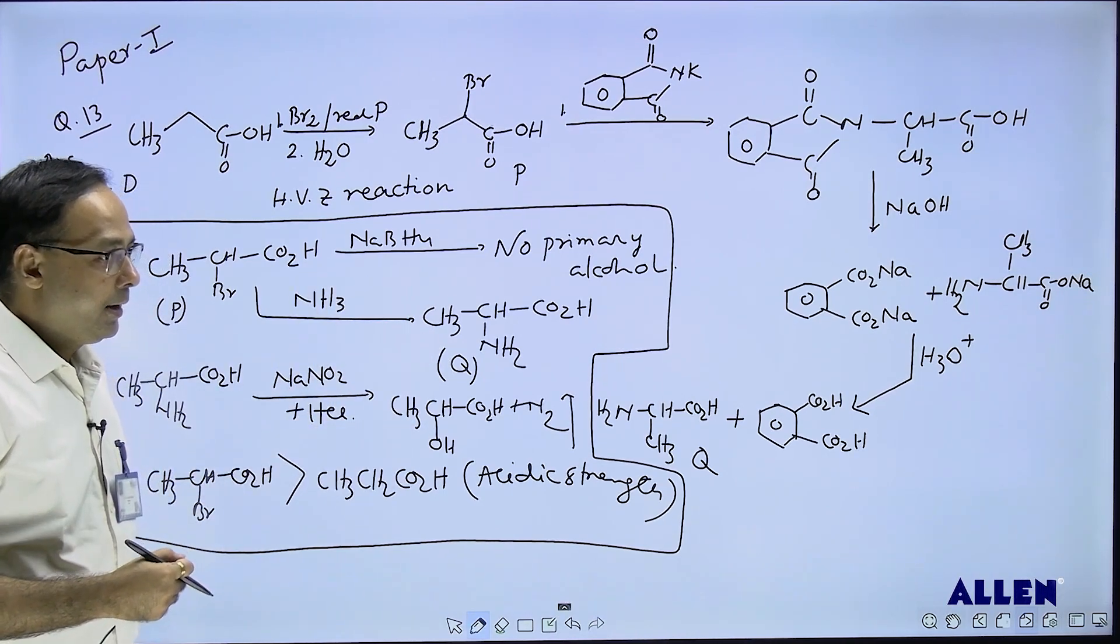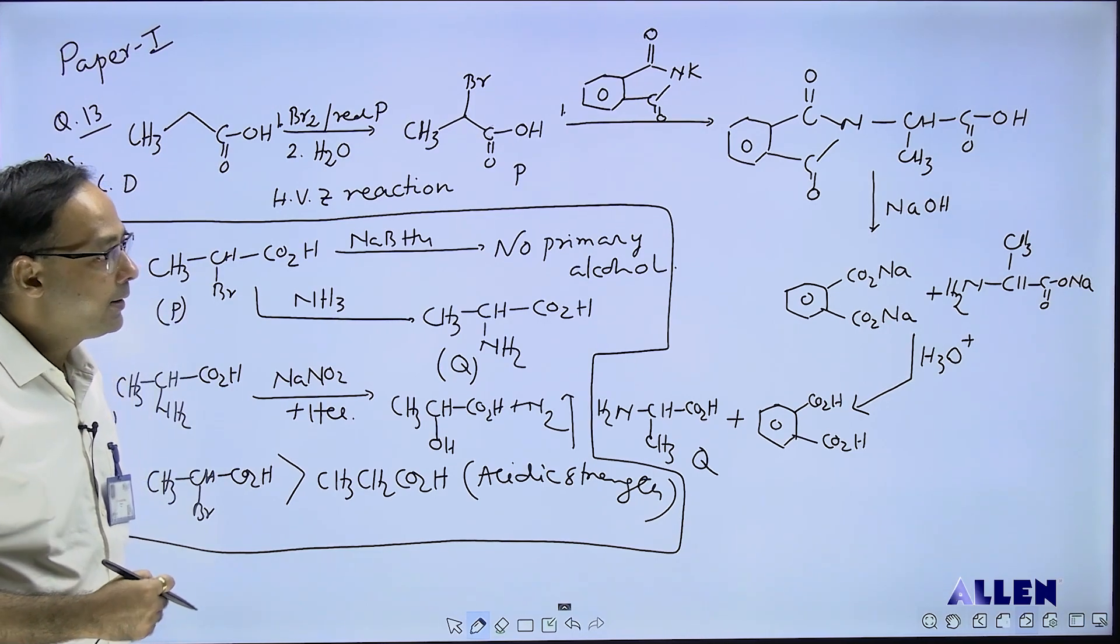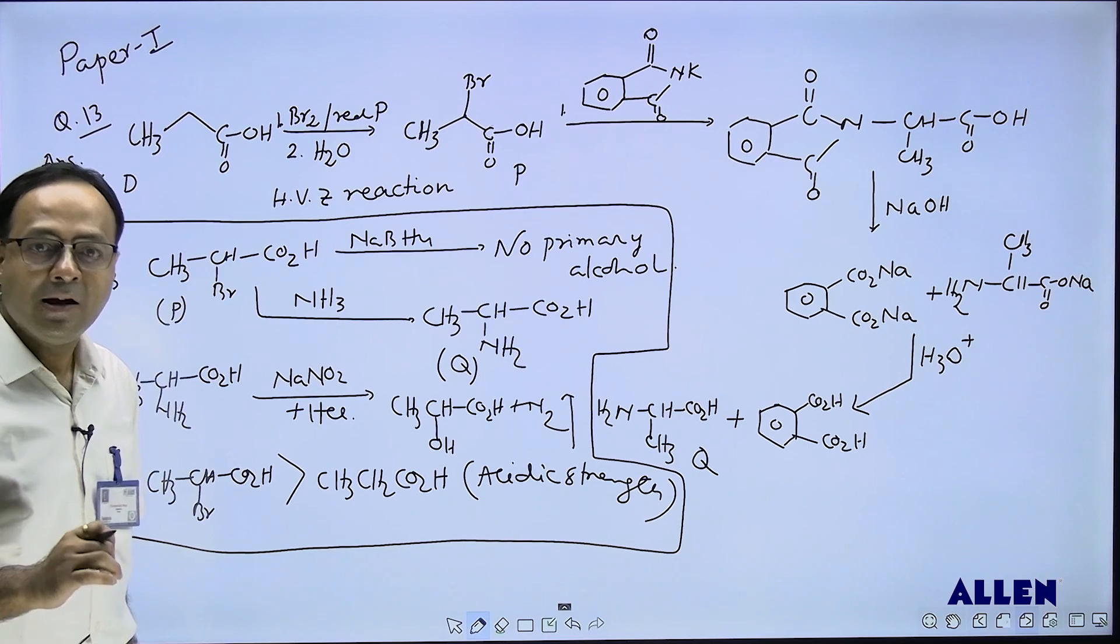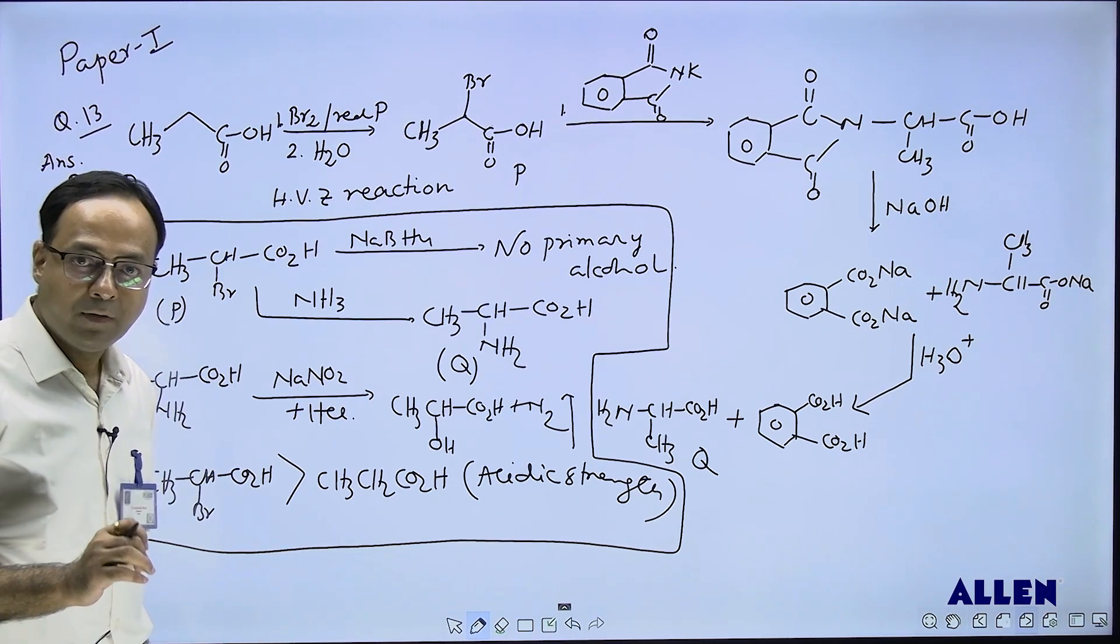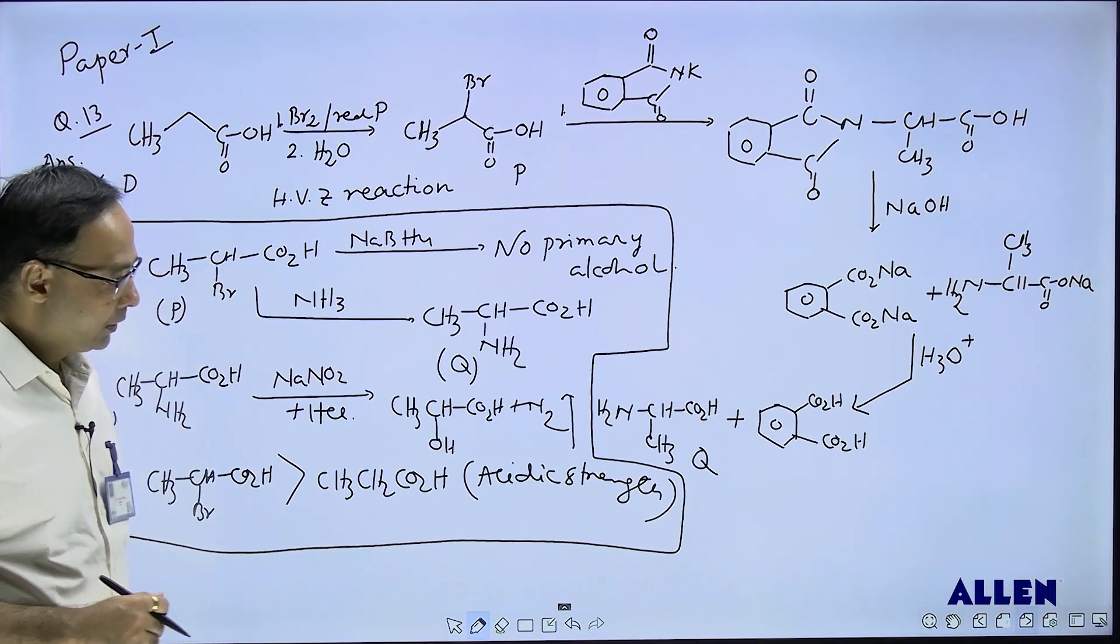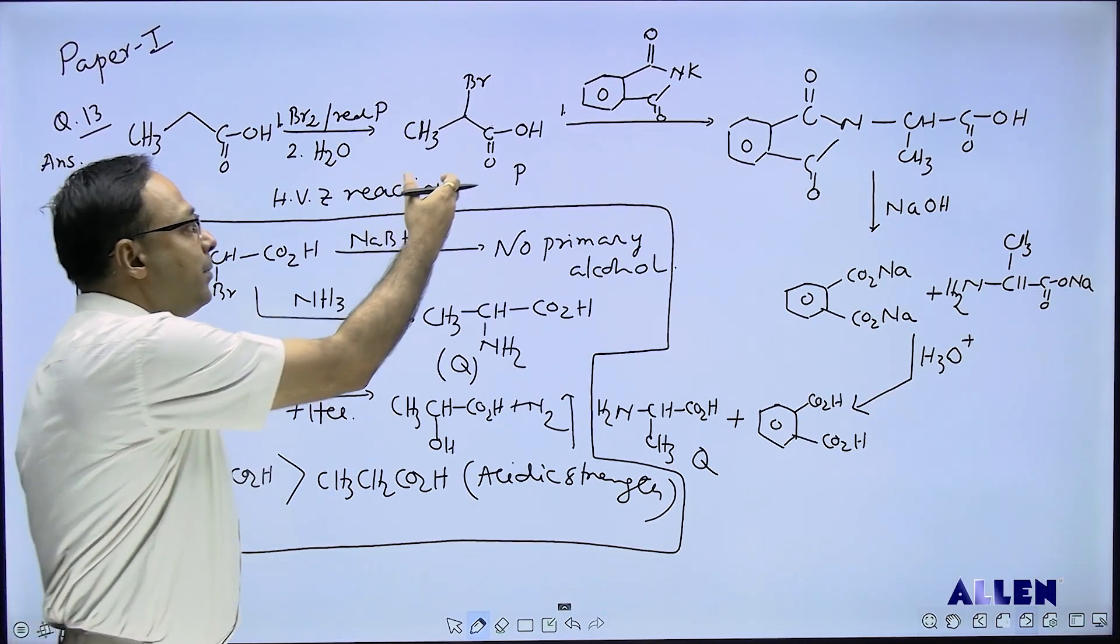Here it is amide hydrolysis in basic medium followed by acidification. Ultimately, it is a preparation of alpha amino acid which is called alanine. So alanine is Q and alpha bromo acid is P.